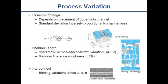Process variation includes threshold voltage variation, which depends on the precise placement of dopants in your channel — very hard to control in manufacturing. The distribution of this is inversely proportional to the channel area, so larger channels give better control and lower variation. Threshold voltage variation is particularly important when dealing with low-power subthreshold transistors, where there's an exponential dependence on threshold voltage. A small change in threshold voltage can result in an exponential change in leakage current or drive strength.